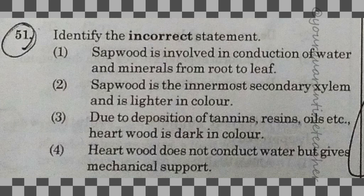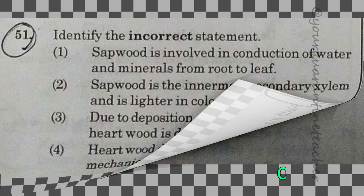51st question: identify the incorrect statement. Option 2 — sapwood is the innermost secondary xylem and it is light in colour — that is wrong. The answer is option 2.